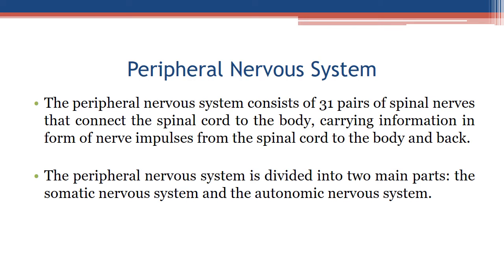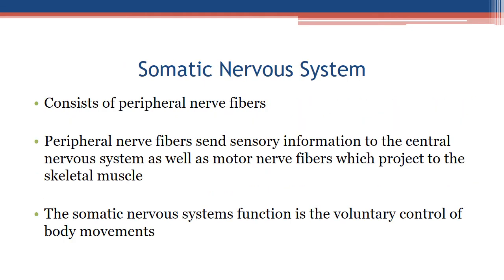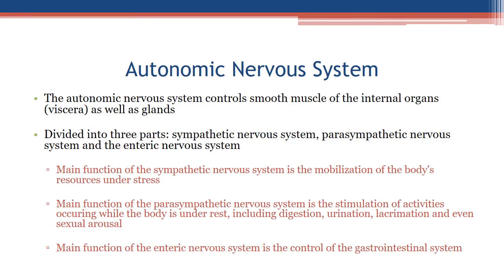Somatic nervous system: consists of peripheral nerve fibers that send sensory information to the central nervous system, as well as motor nerve fibers which project to the skeletal muscle. The function of the somatic nervous system is the voluntary control of body movements.